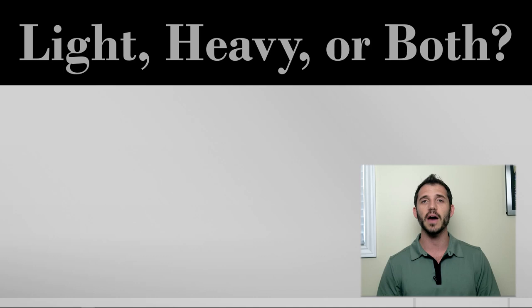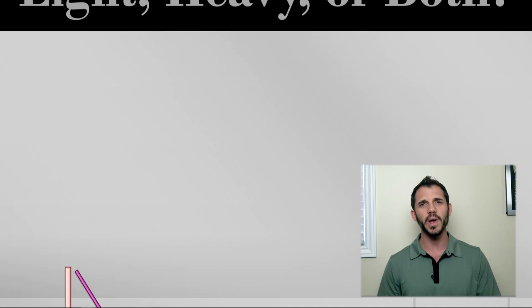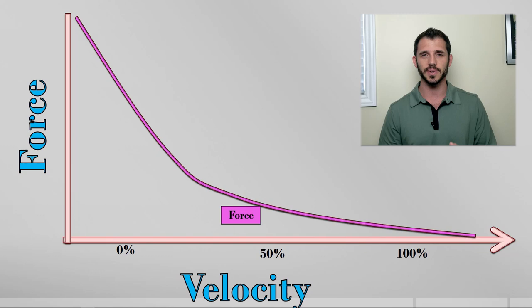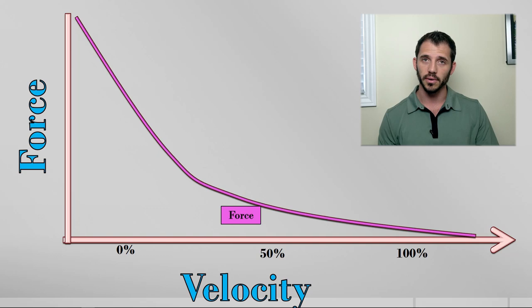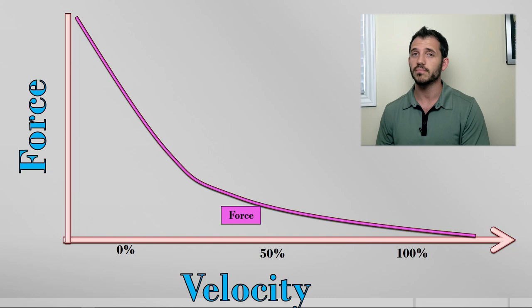Well, to understand the optimal load for power, we have to look at biomechanics a little bit. And if you know me, you know how much I hate math and especially biomechanics. But I promise you, if a dummy like me can understand this, you can too. So we have to take a look at what's called the force velocity curve. We know that power is equal to force multiplied by velocity. And we know that the relationship between velocity and force is inverse.